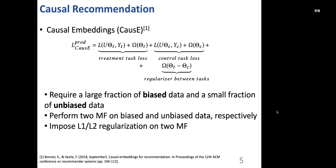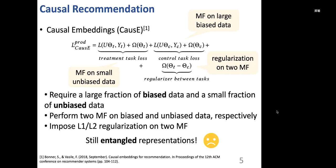The second method is causal embedding, and this method performed two matrix factorization tasks on large biased datasets and small unbiased datasets. An L1 or L2 regularization term is also imposed on the two tasks. However, the representations learned in this method are still entangled.